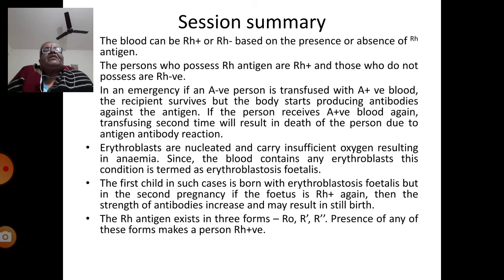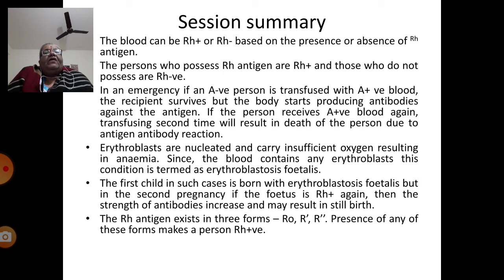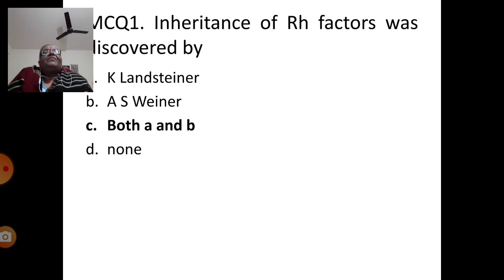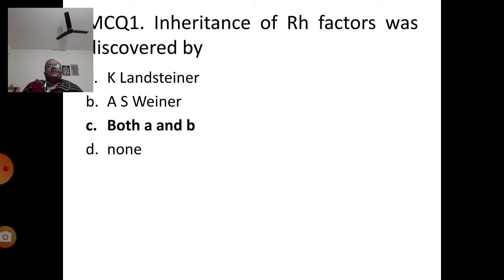In this session, you have learned about Rh positive and Rh negative conditions based on presence or absence of Rh antigen, complications in blood transfusion, erythroblastosis fetalis, and the three existing forms of Rh antigen — R₀, R′, and R″ — that make a person Rh positive.